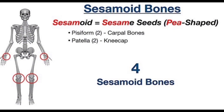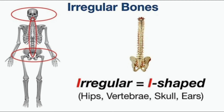Now let's move over to irregular bones. Irregular bones have odd shapes and they don't fit into other categories. The trick in remembering irregular bones is to use the I in irregular — these bones are primarily found in the hip, spine, skull, and ears. Examples include: in the hips, the hip bone; in the spine, the vertebrae including the sacrum and coccyx; and in the skull, the temporal, ethmoid, sphenoid, zygomatic, maxilla, mandible, inferior nasal concha, and palatine bones. For the ears, you have the malleus, incus, and stapes. An average adult has over 48 irregular bones.